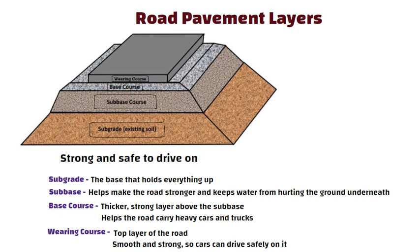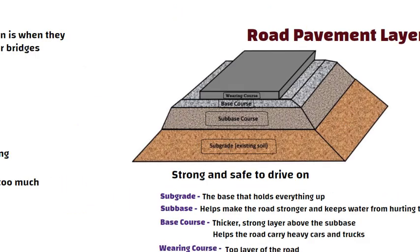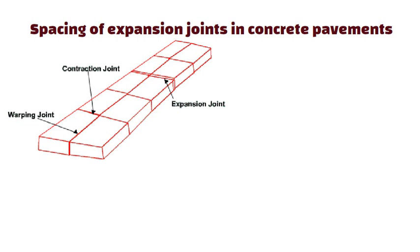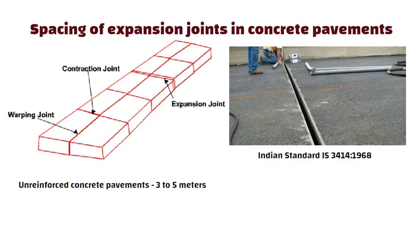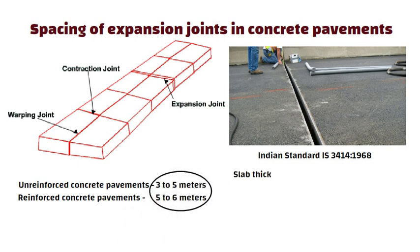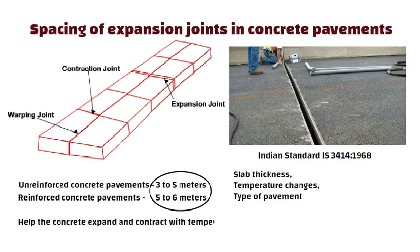Spacing of expansion joints in concrete pavements. As per Indian Standard 3414:1968, the spacing of expansion joints in concrete pavements is typically: for unreinforced concrete pavements, the joint spacing should be 3 to 5 meters; and for reinforced concrete pavements, the joint spacing can be 5 to 6 meters. This spacing depends on the slab thickness, temperature changes, and the type of pavement. The joints help the concrete expand and contract with temperature changes.